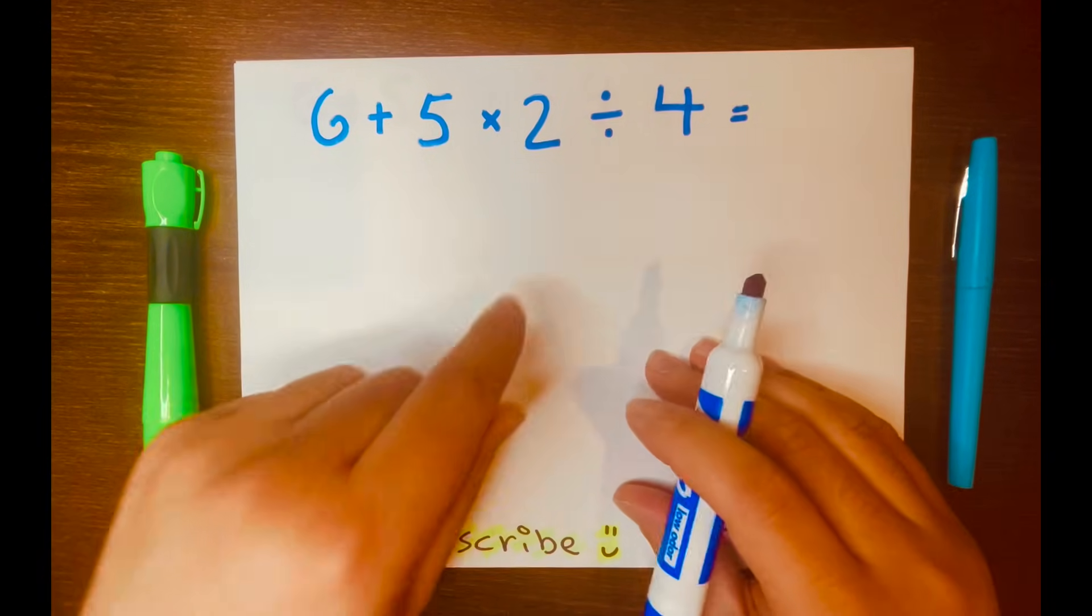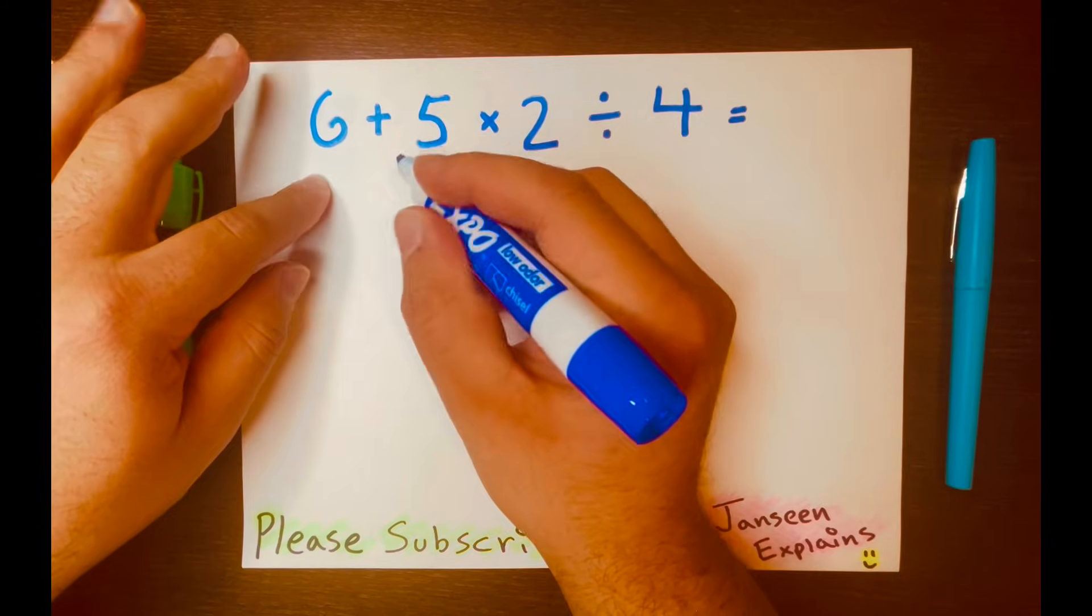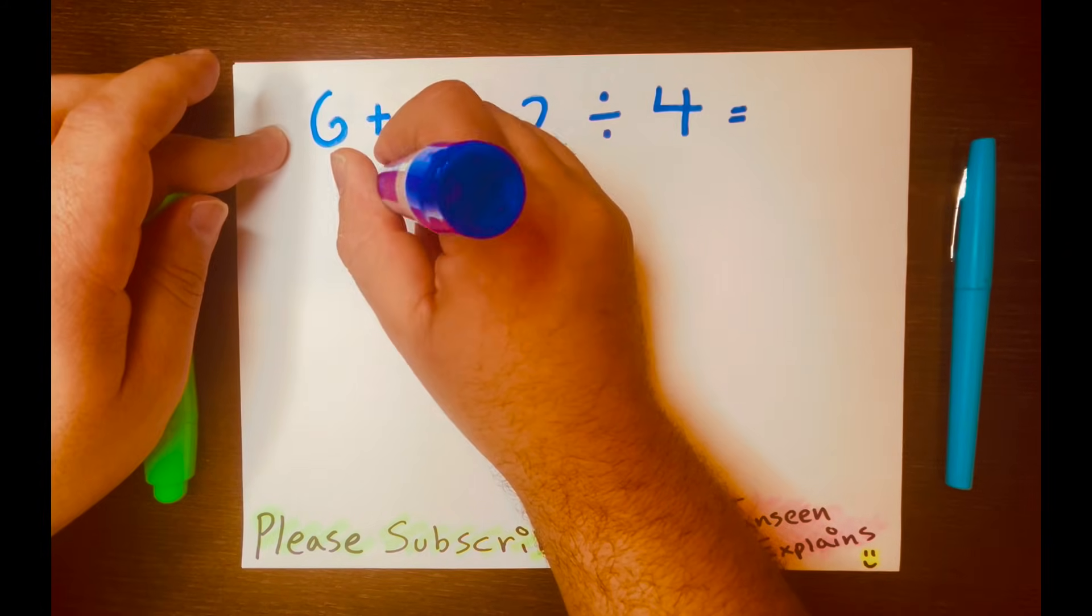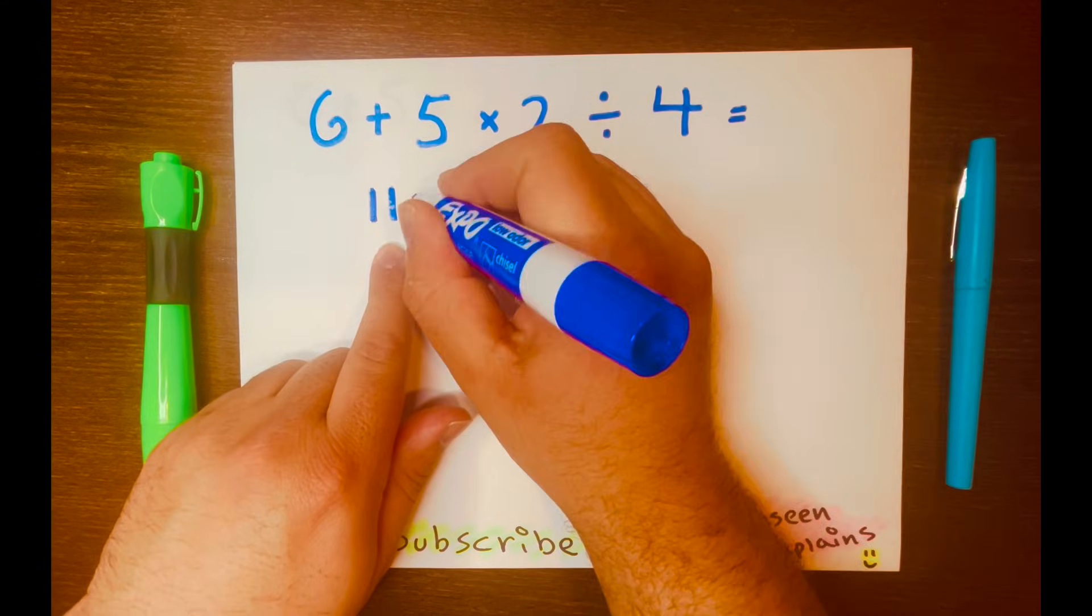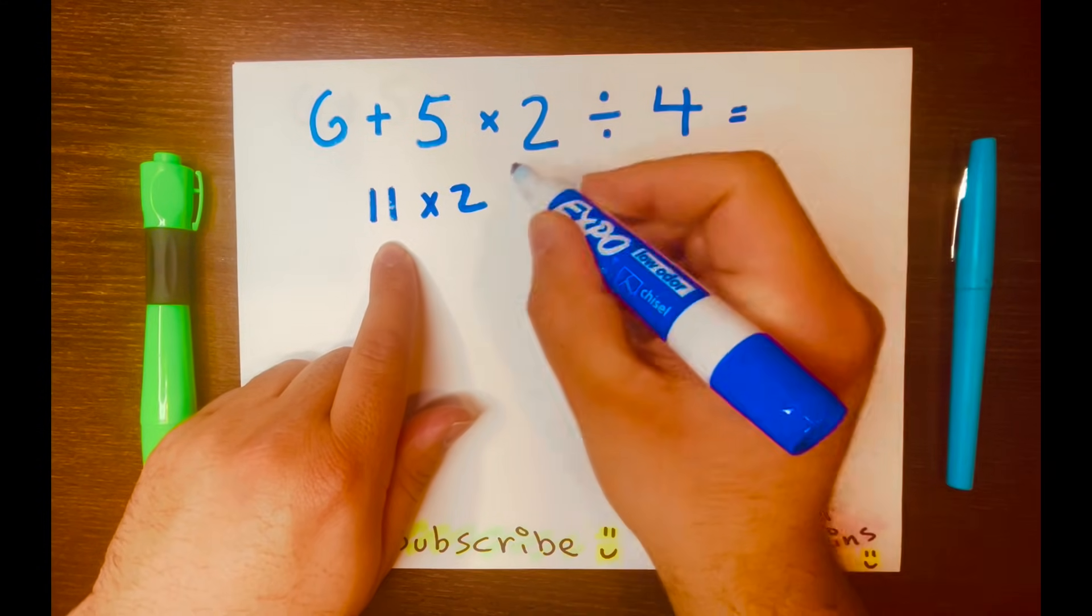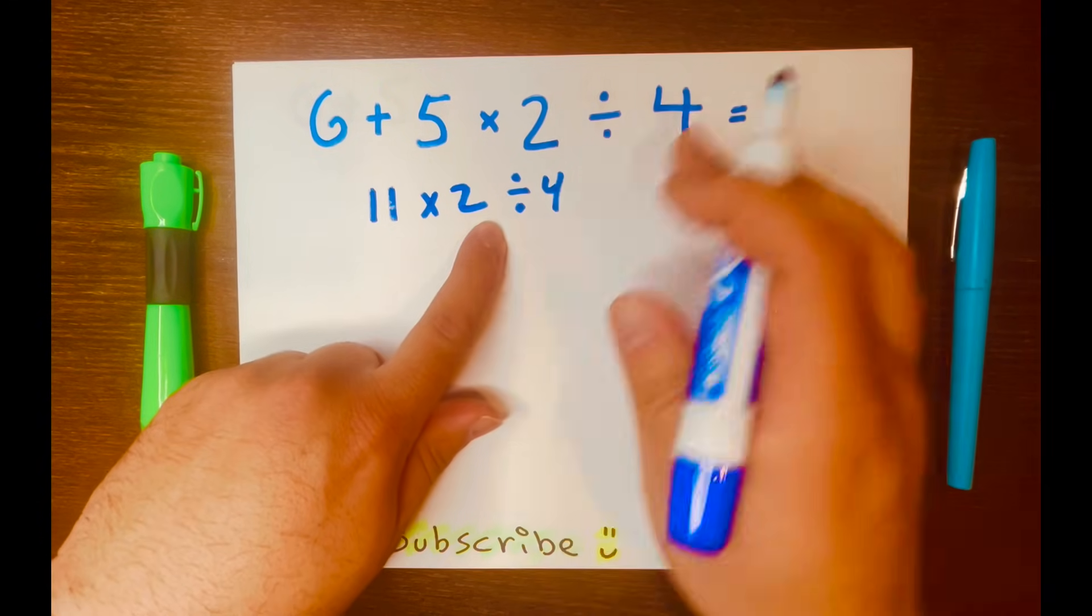Hi everyone. Some people when they start solving this math problem, they'll start with 6 plus 5, which equals 11. So they'll write 11, then they'll bring the times 2 down and the division 4 down, or the division symbol.